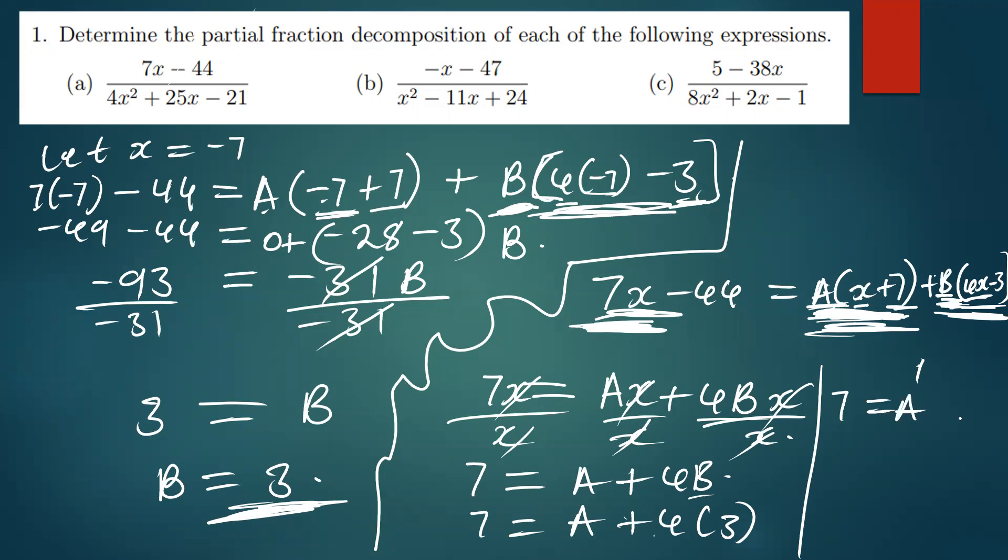So to find a, we simply just take this 12 to the other side of the equal sign, so that we have a is equal to 7 minus 12.